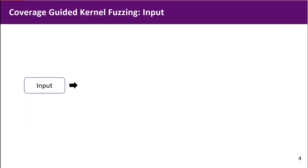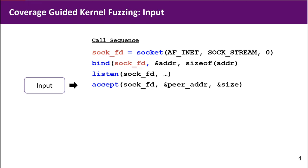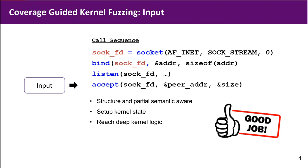We need to focus on the input. Different from userspace, kernel fuzzing uses call sequences as input. The target here is that we want to generate call sequences where each call's parameters can satisfy structural and partial semantic constraints. We want to set up kernel state for each call and reach deep kernel logic.